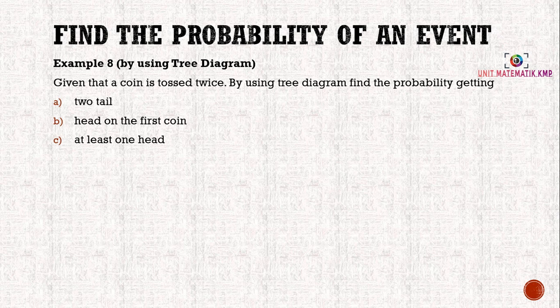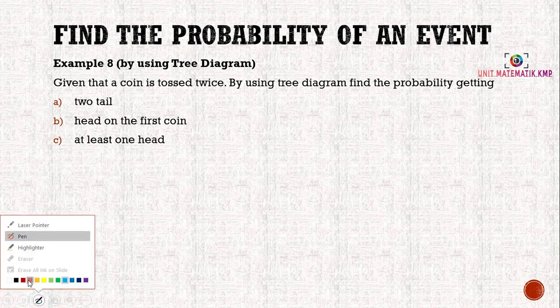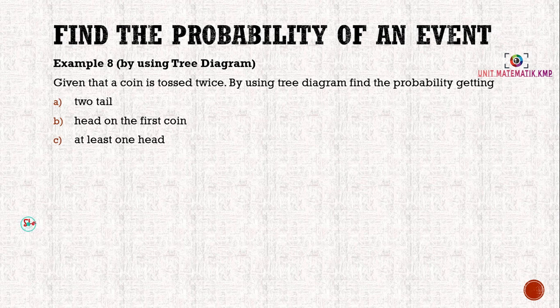Example eight: by using a tree diagram. A coin is tossed twice. By using a tree diagram, find the probability of getting two tails. Before we find the probability, we need to draw the tree diagram, starting from the first toss.